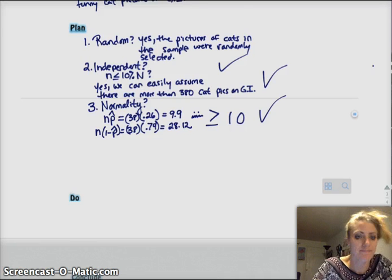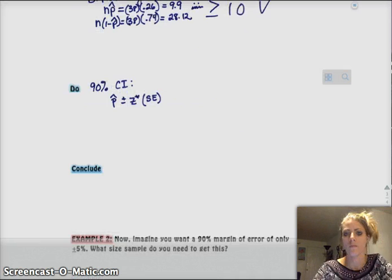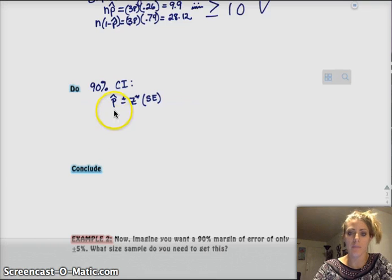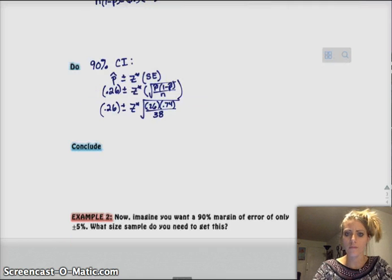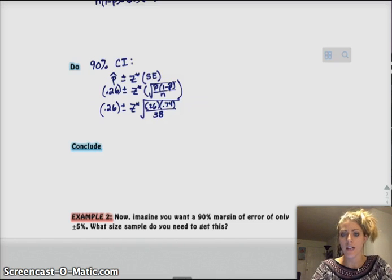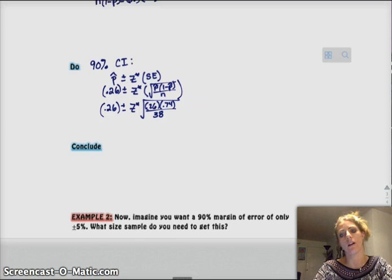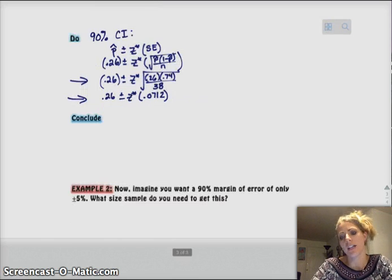So now is the do part. So here's what we need to figure out. We want p hat plus or minus z star times the standard error. So plug those numbers in and I get 0.26 plus or minus z star times the square root of 0.26 times 0.74 all over 38.